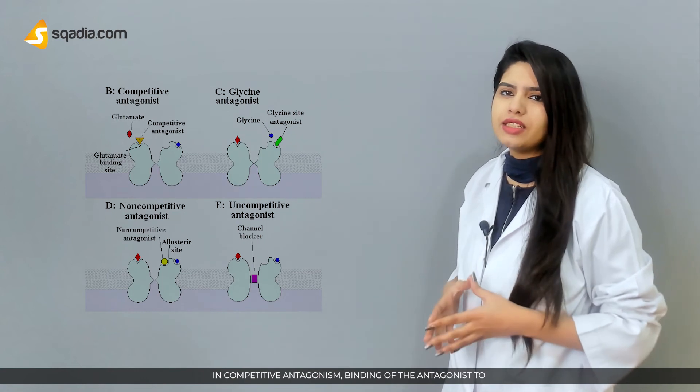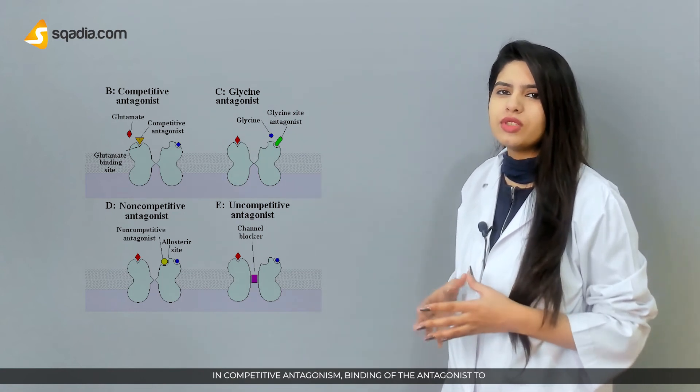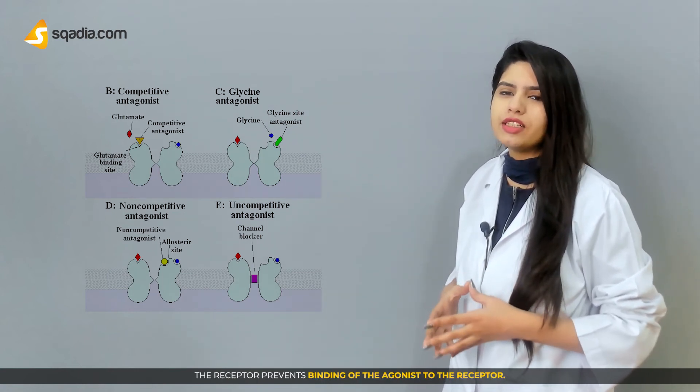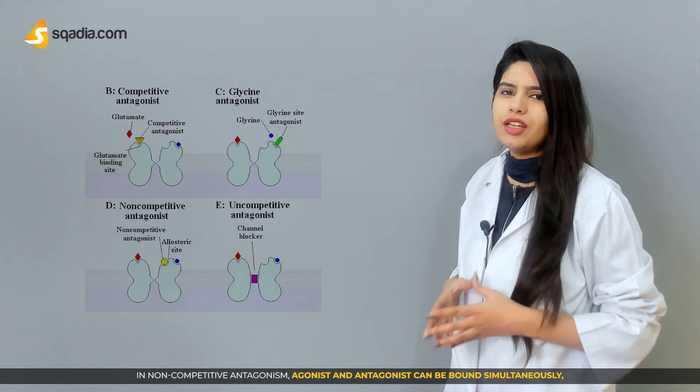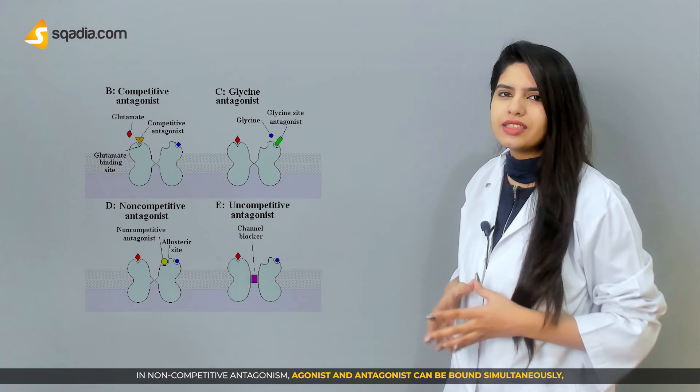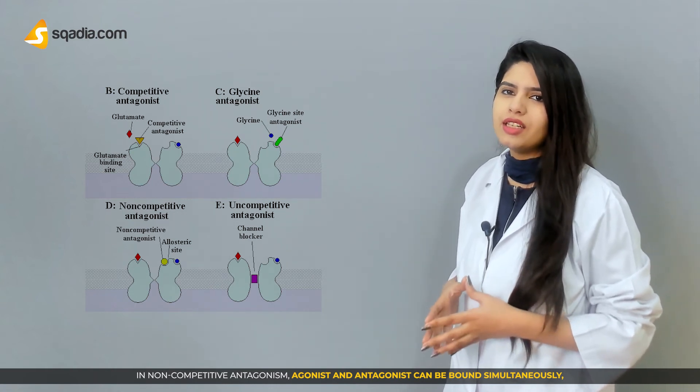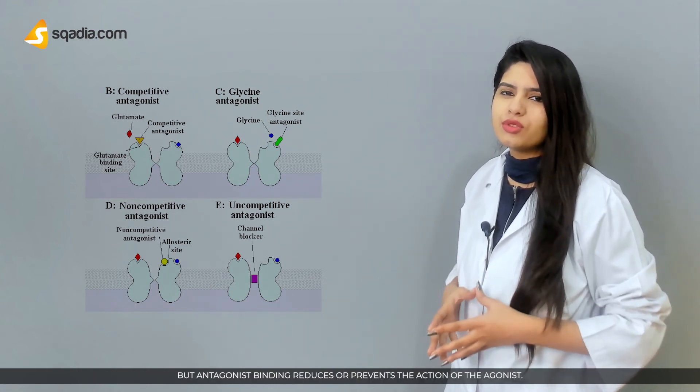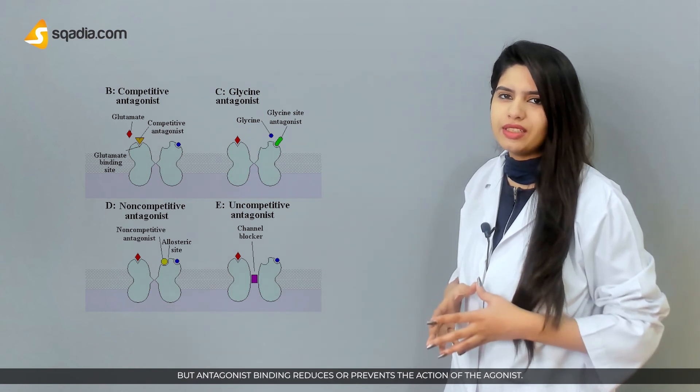In competitive antagonism, binding of the antagonist to the receptor prevents binding of the agonist to the receptor. In non-competitive antagonism, agonists and antagonists can be bound simultaneously, but antagonist binding reduces or prevents the action of agonists.